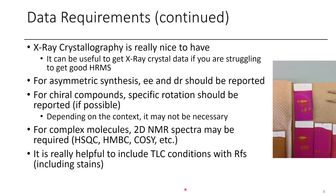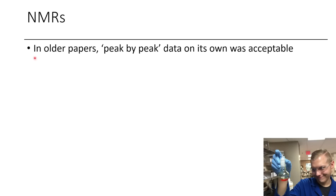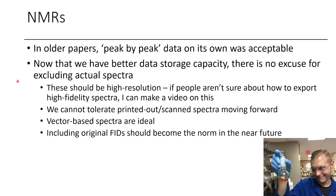It's really useful to include TLC conditions with Rf values — what solvent did you use for TLC for your compound? This is a quick, easy way to confirm whether you have your compound based on its Rf in a given solvent system. It also helps to include stains because not everything is UV active — here you can see this plate is stained with KMnO4. Now that we have data storage capacity, we should always provide copies of spectra, and the best case scenario is if this is a vector-based spectrum that you can keep zooming into versus a static JPEG or PNG.